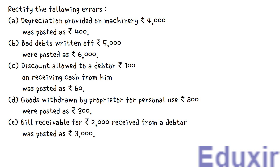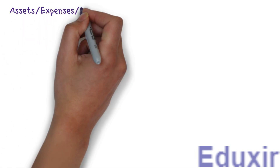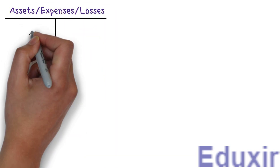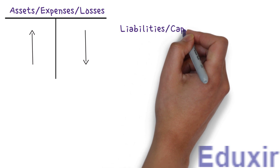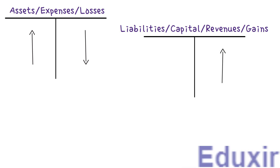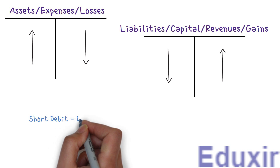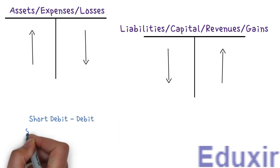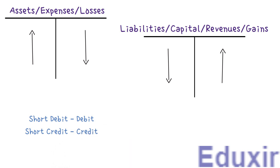Before proceeding with the analysis of these errors, let's first do a small recap. In case of assets, expenses, or losses, any increase should be debited and any decrease should be credited. Whereas in case of liabilities, capital, revenues, or gains, any increase should be credited and any decrease should be debited. Also remember that if the error is due to short debit, then we should debit the corresponding account. If the error is due to short credit, then we should credit the corresponding account. The error rectification entry will be on the same side as the side on which the error is committed.